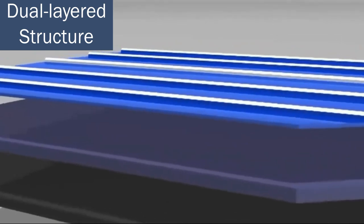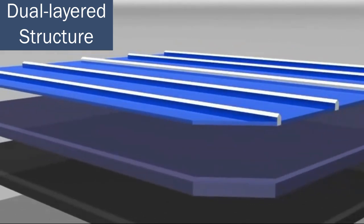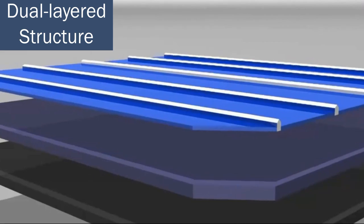Solar panels generate electricity based on the movement of electrons and holes within the material. Therefore, they adopt a dual-layer structure, with the bottom layer being P-type and the top layer being N-type. When combined, they form a P-N junction.